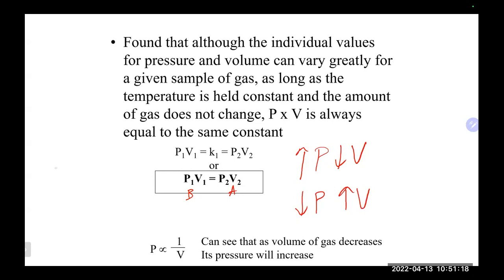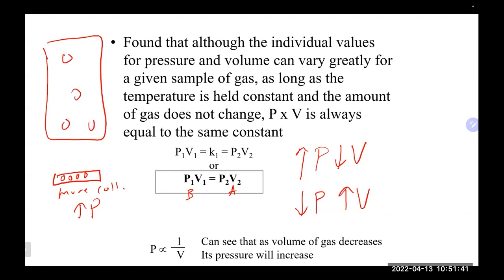The inverse relationship in Boyle's Law is important to keep in mind when doing calculations to verify your answer makes sense. If you have a very small volume with all your gas molecules, there's a greater chance of many collisions — more collisions, more pressure. Giving molecules more room to fly around means it takes longer for collisions to occur, reducing pressure. Understanding these relationships helps confirm your answer is correct.